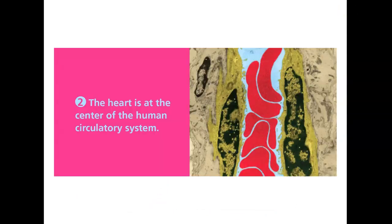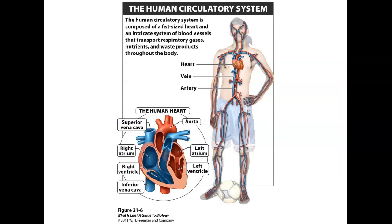The heart is at the center of the human circulatory system — about the size of a male fist, located in the center of the chest in the mediastinum. It pumps blood, nutrients, and waste products around the body so waste can be released through the urinary system or lungs.